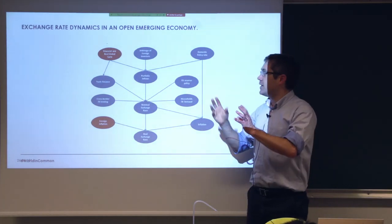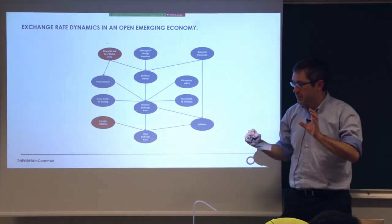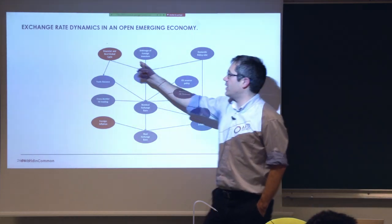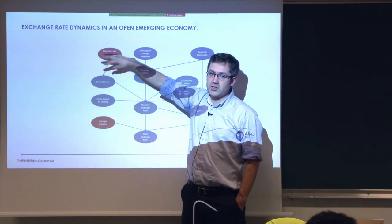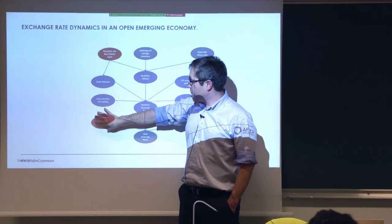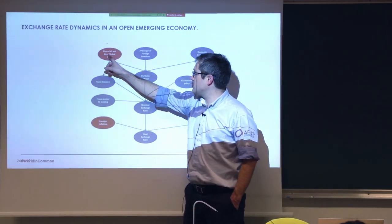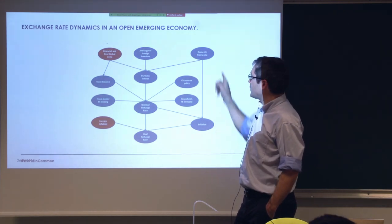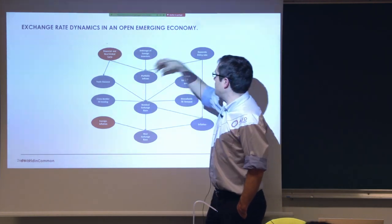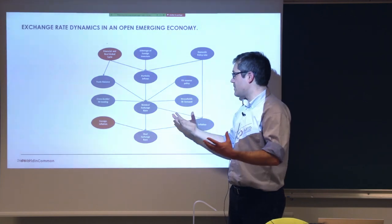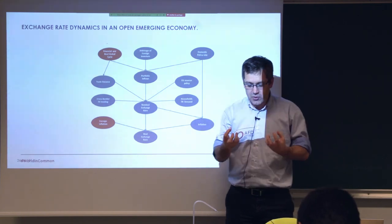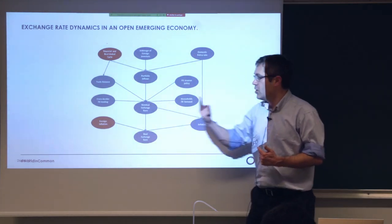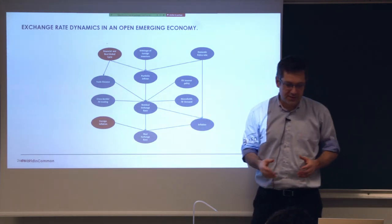In our model, we have exogenous dynamics coming from global financial and real cycles, plus global inflation, which are not modeled endogenously but treated as scenarios. The combination of these exogenous dynamics with endogenous dynamics — such as the arbitrage decision by foreign investors and the domestic policy rate by the central bank — explains the overall dynamics of the exchange rate. Our model has an explicit causality structure, which is fundamental: we are really interested not in the ex-post situation, but in understanding how we get there.